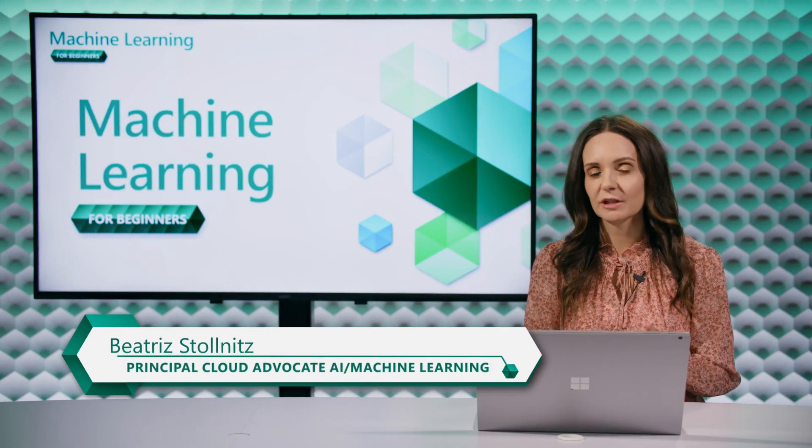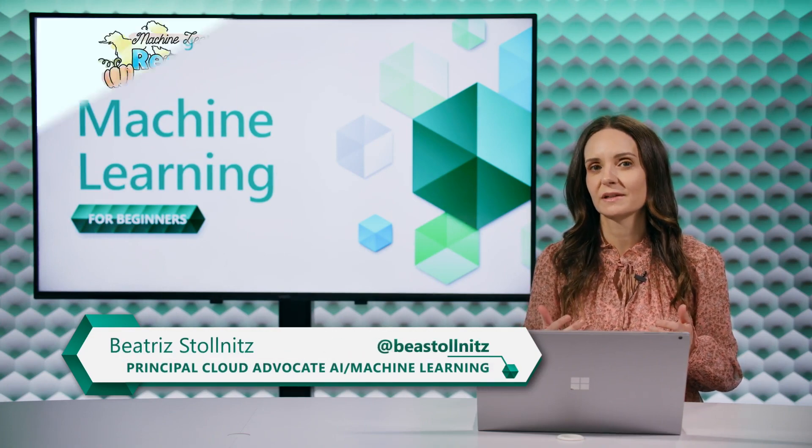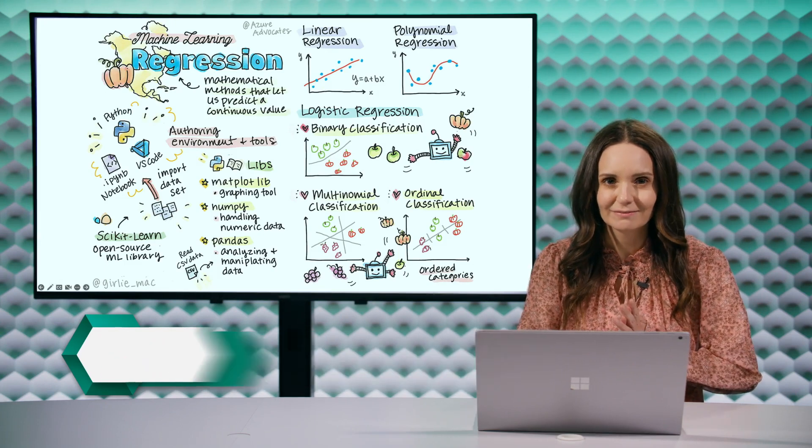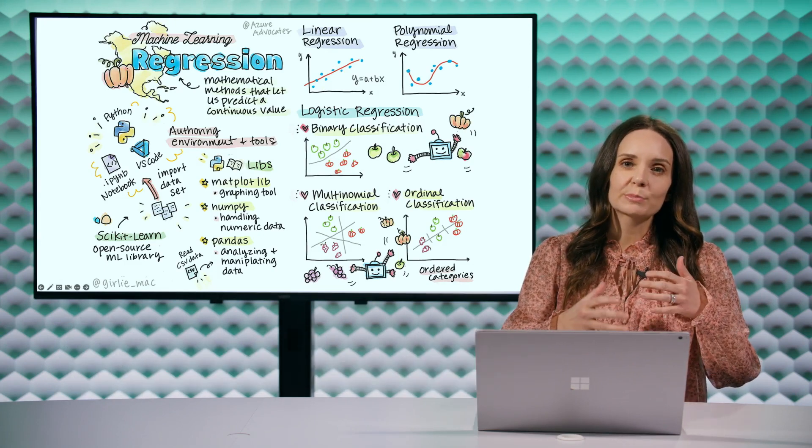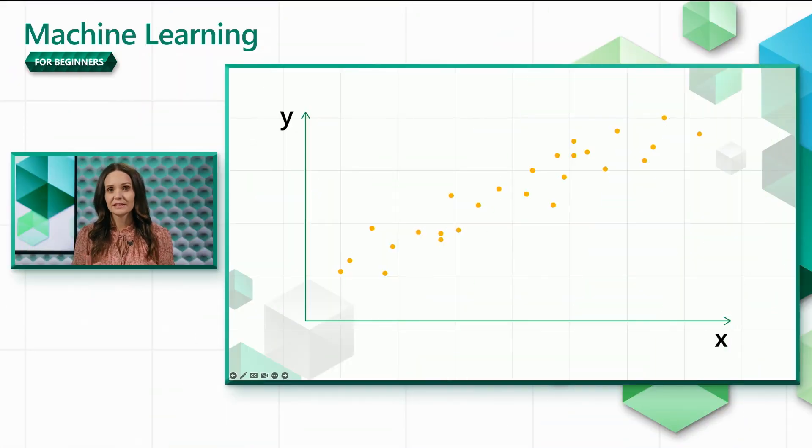In machine learning, regression models can help to investigate the relationship between variables. What does this mean exactly? Imagine that you collect the price of a package of pumpkins on different days of the year. You want to visualize this data, so you plot it such that the x value of each point is the day of the year the package is sold and the y value is the price of the package.